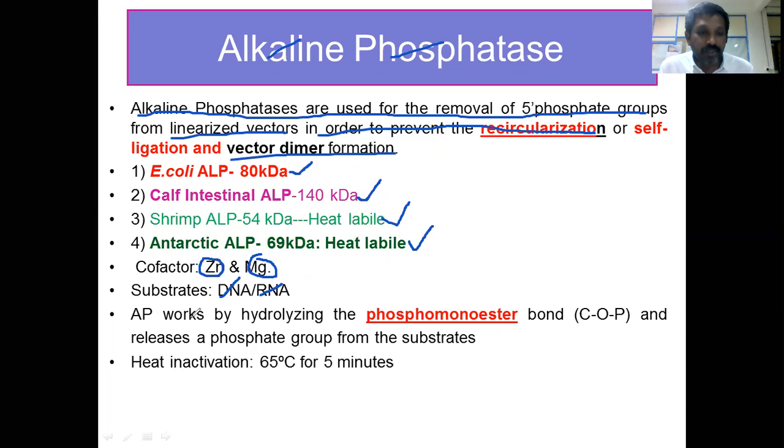Alkaline phosphatase works by hydrolyzing the phosphomonoester bond, the C-O-P bond, and releases a phosphate group from the substrates.